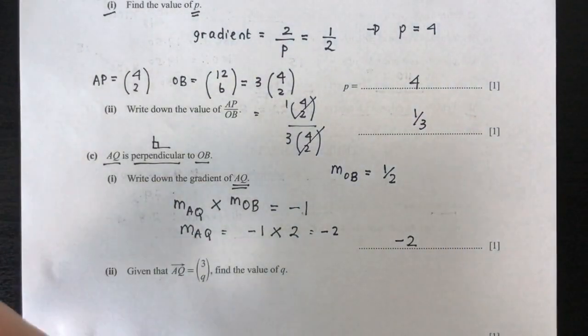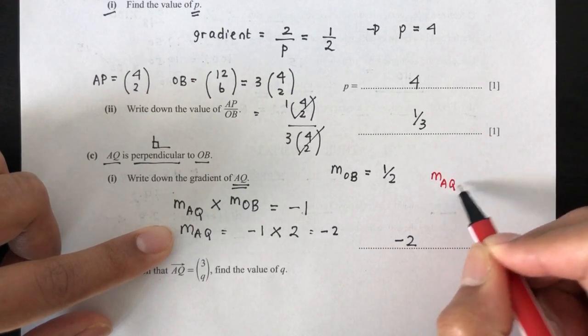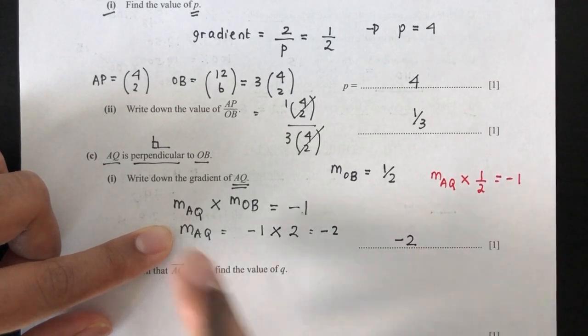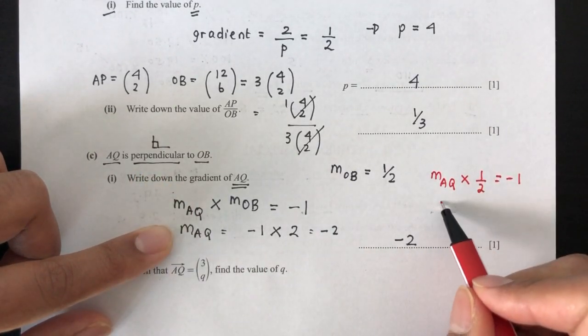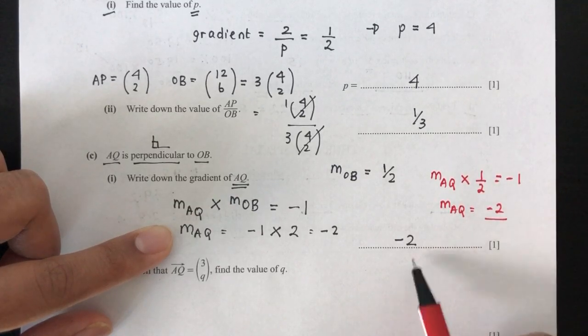So just to write this properly again, so we have M AQ, we don't know, right? M AQ times M OB is half, is supposed to give you minus 1 if it is perpendicular. Now we solve M AQ is equal to minus 2. That's why.